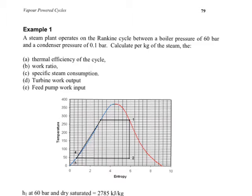Let's look at example 1 from chapter 4, Vapour Power Cycles. In this example, we are given a basic Rankine cycle. We are told that the Rankine cycle operates between a boiler pressure of 60 bar and a condenser pressure of 0.1 bar. For 1 kilogram of steam, there are 5 items to calculate.